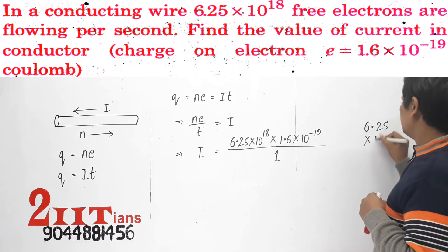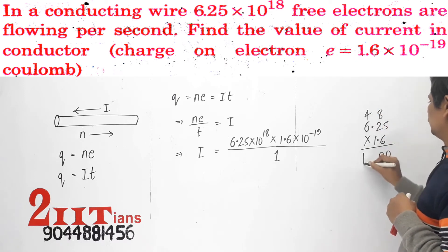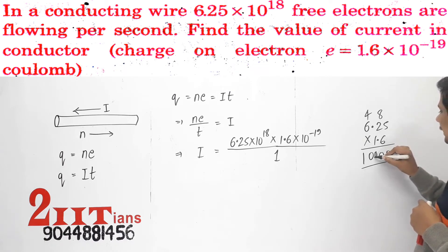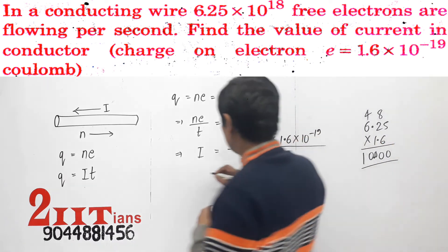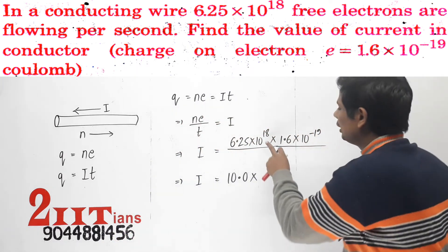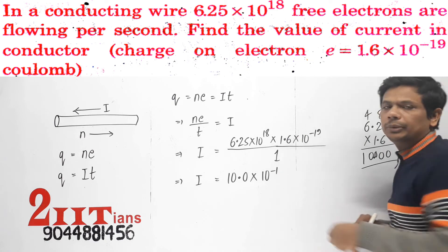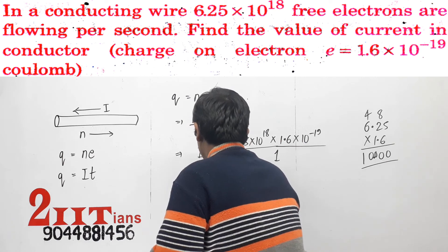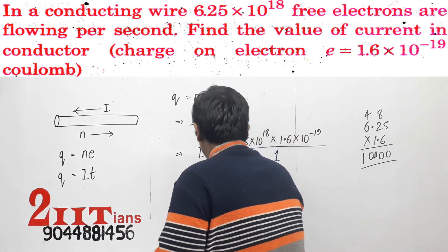So we calculate 6.25 into 1.6, which becomes 10.0. So I equals 10.0 into 10 to the power 18 divided by 10 to the power 19. This becomes 10 to the power minus 1, and 10 and 10 to the power minus 1 will cancel each other, giving 1. So the current flowing is one ampere.